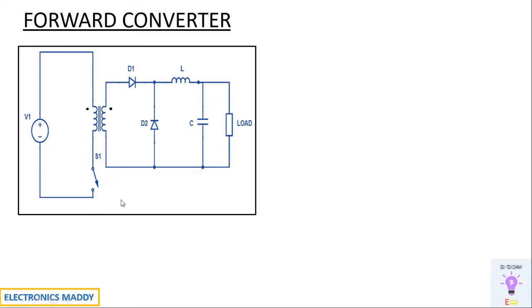One of the major advantages of this topology is that once the switch is on and power is supplied to the primary winding, current will be flowing through the load and the load will be receiving power instantaneously. In the case of a flyback converter, it takes some time for the capacitor to charge, and then the capacitor is responsible for supplying power to the load. But in a forward converter, power is delivered the instant the switch is on — that is why it is popularly used over the flyback converter.